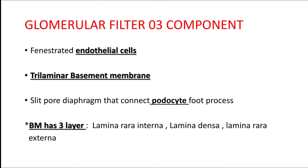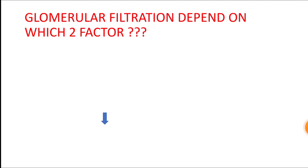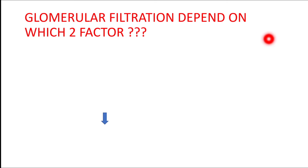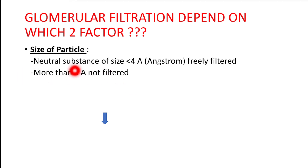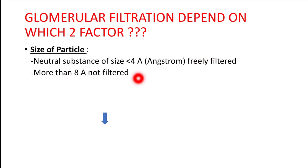The main function of the kidney is to regulate salt and water concentration through glomerular filtration. Two main factors regulate glomerular filtration. The first factor is size of the particle: if the substance is neutral and its size is less than 4 angstroms, it can easily be filtered by the glomerular basement membrane. If the size is more than 8 angstroms, it is not filtered by the glomerulus.